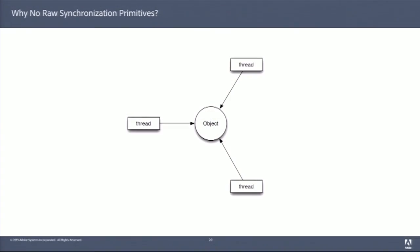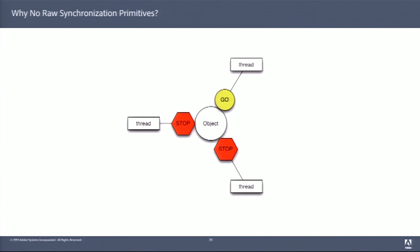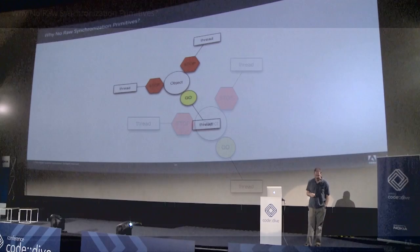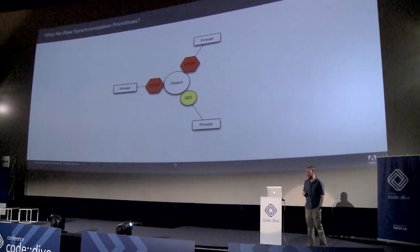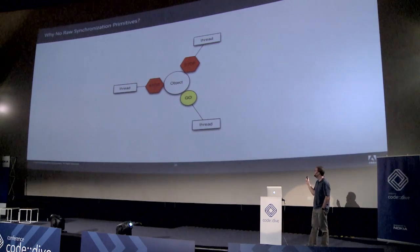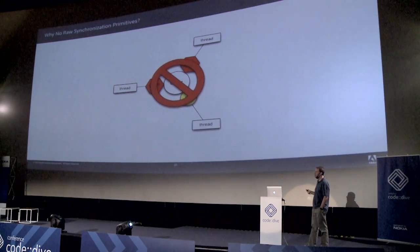Everybody thinks about threading as having an object and a bunch of threads banging on it, so they throw in a mutex to let only one thread bang on that object at a time, and each thread will acquire the lock. This is a horrible way to write threaded code. Don't do that. We want to minimize our locks.